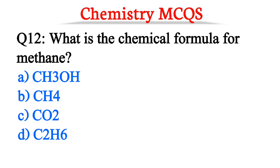Question number 12. What is the chemical formula for methane? The correct option is option B, CH4.